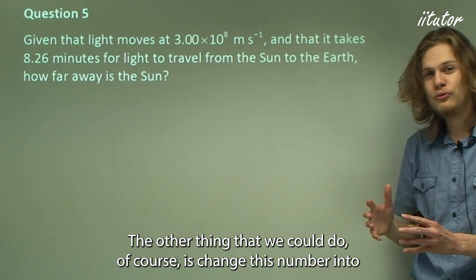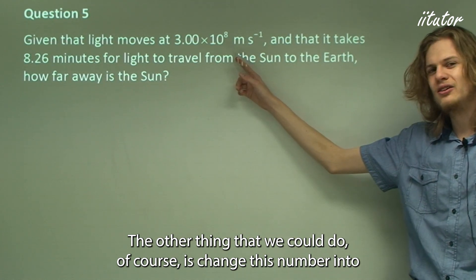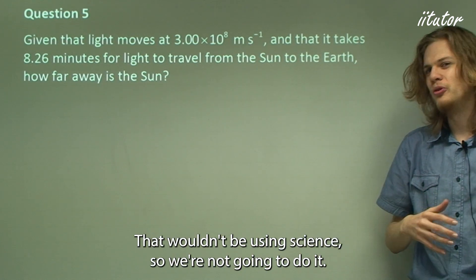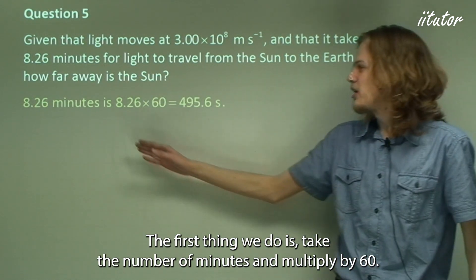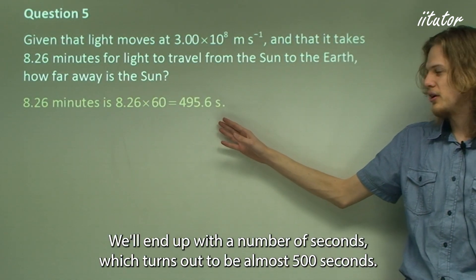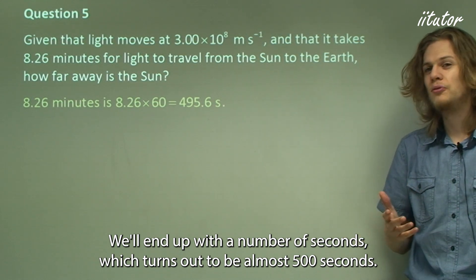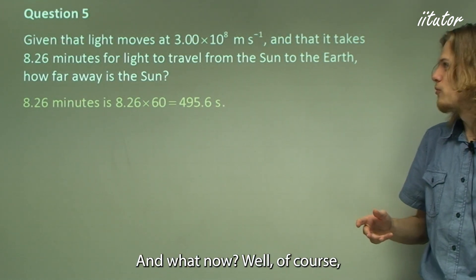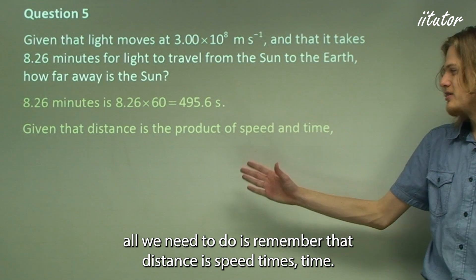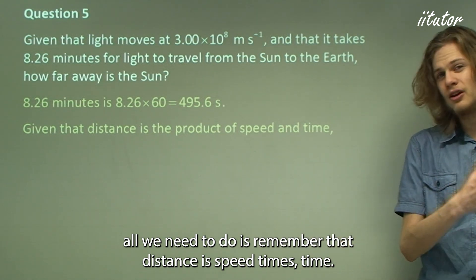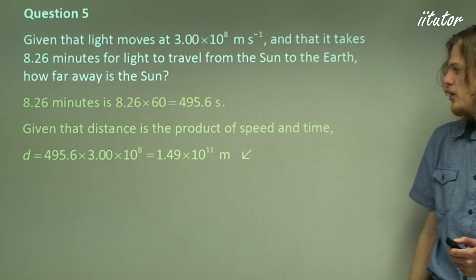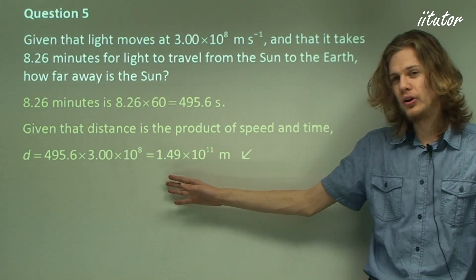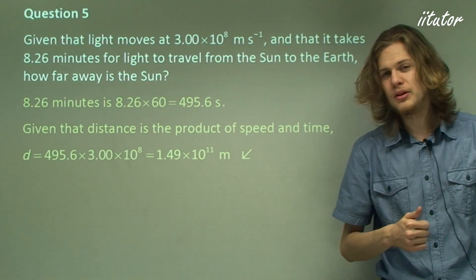The other thing that we could do, of course, is change this number into meters per minute. That wouldn't be using SI units, so we're not going to do it. The first thing we do is take the number of minutes and multiply by 60, we'll end up with the number of seconds, which turns out to be almost 500 seconds. And what now? Well, of course, all we need to do is remember that distance is speed times time. So we've got time, we've got speed, and multiplying them together, we end up at an answer of 1.49 times 10 to the 11 meters.